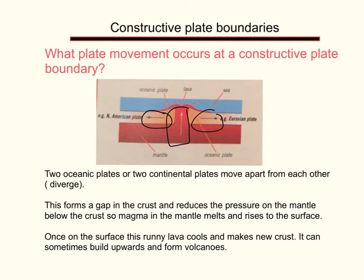And it reduces the pressure on the mantle below, so this magma starts to melt. And then it rises up through this gap. Once on the surface, this magma becomes lava. The name changes. And it's a runny lava, so it starts to flow.